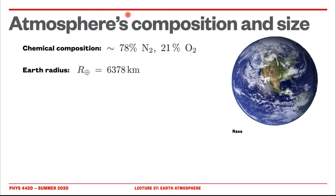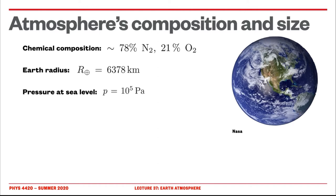The radius of the Earth is 6,300 kilometers. The pressure at sea level is about 100,000 Pascal. The pressure is the force exerted on one square meter of surface. So consider this big column of air — if we know the pressure, we know the force, and since that force is gravitational in nature, we should be able to calculate the mass of the atmosphere, because it's possible to get the mass of each column and then multiply by the surface area of the sphere.